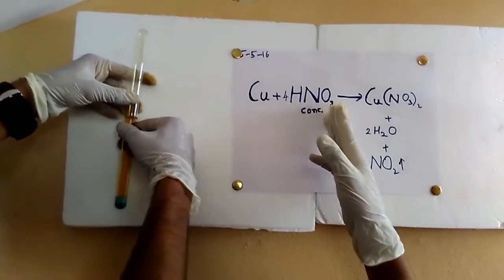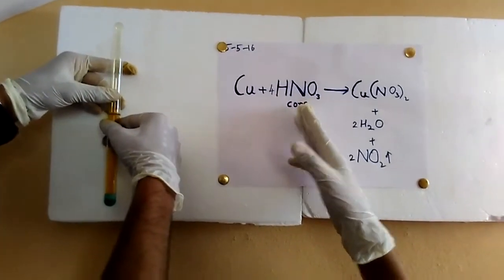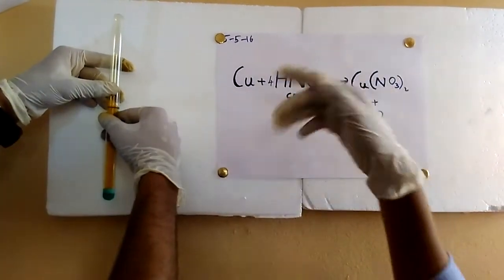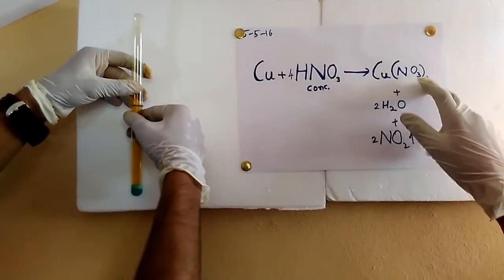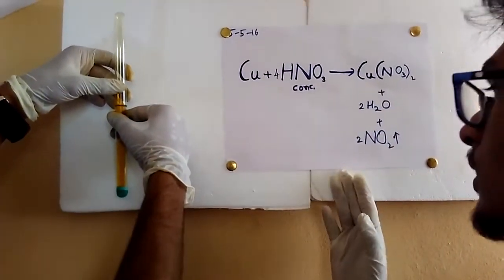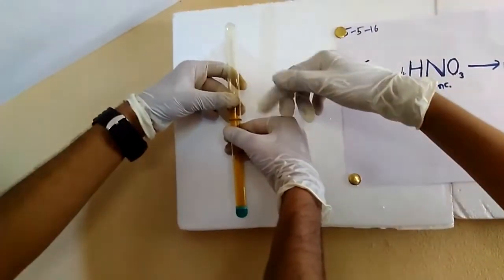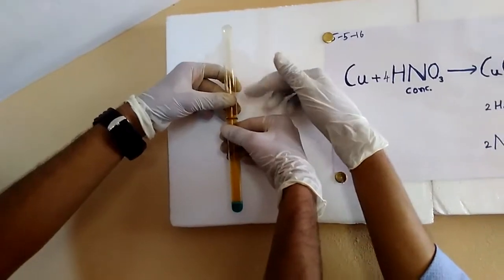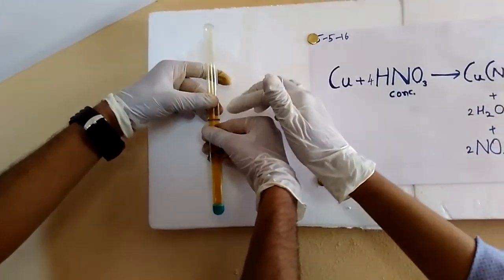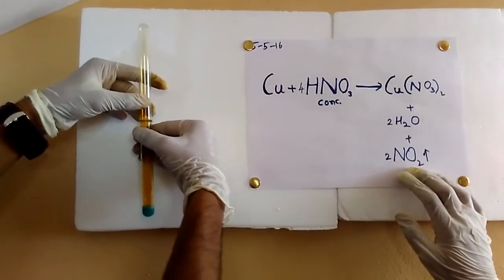Cu plus 4 HNO3 which is concentrated HNO3 gives us copper nitrate. Here the blue solution is nothing but the copper nitrate. And water as usual it will be formed. And nitrogen dioxide is nothing but this reddish brown color gas you can see here. It is nitrogen dioxide. So this is the reaction.